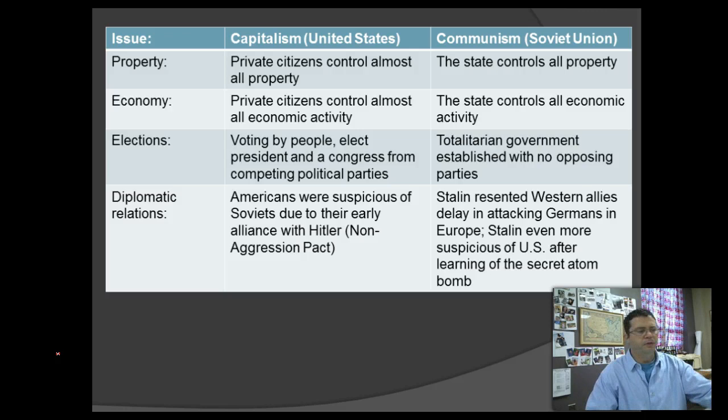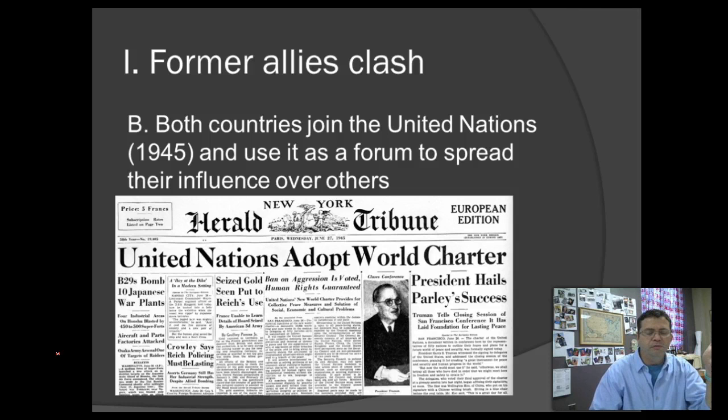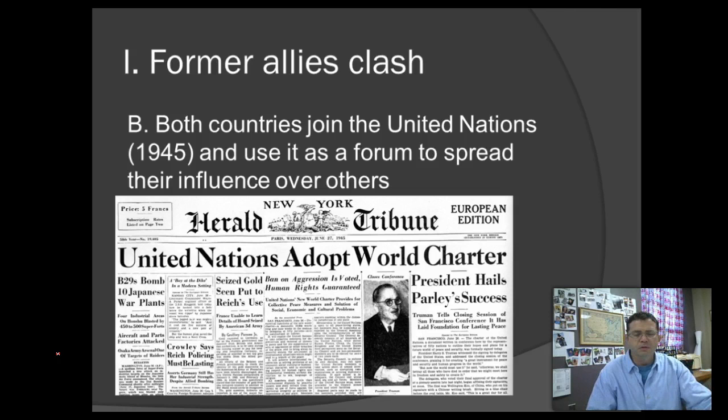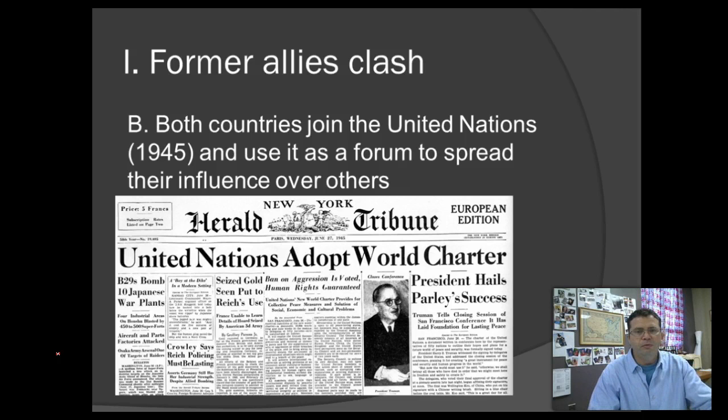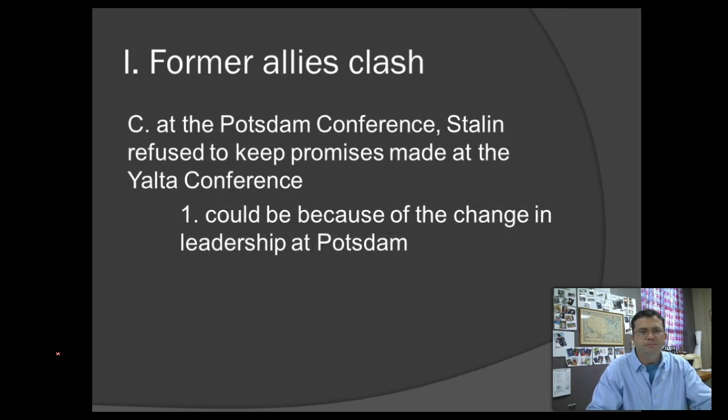Following World War I, there was a creation of a governing body called the League of Nations, which the United States was not involved in. It was extremely weak, went defunct, and that was one of the reasons why World War II was allowed to happen. Another governing body was created right before World War II ended — the United Nations. The United States and the Soviet Union both join this, and the two countries use it as a way to spread their influence over weaker, smaller nations.